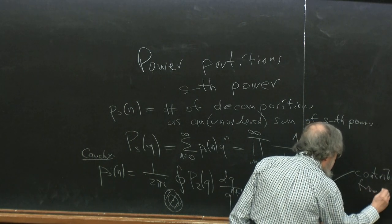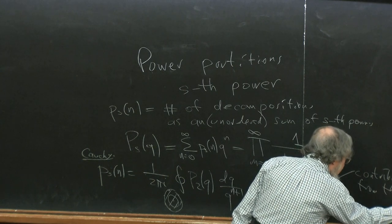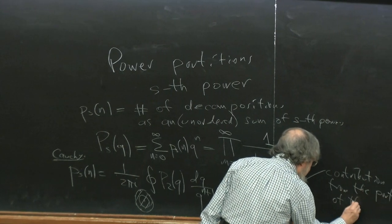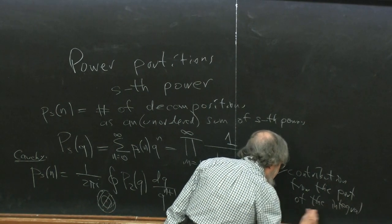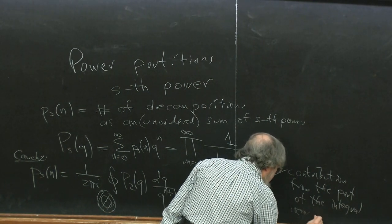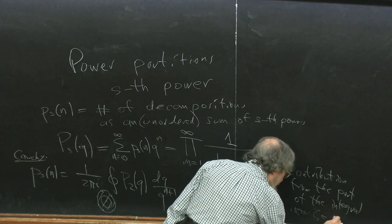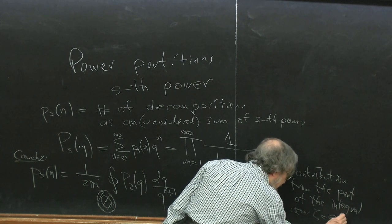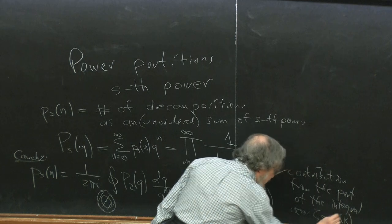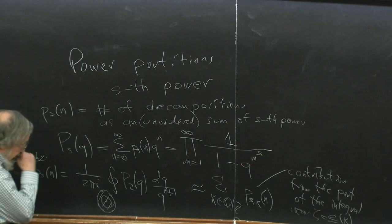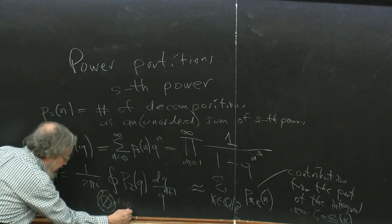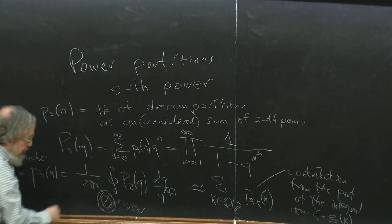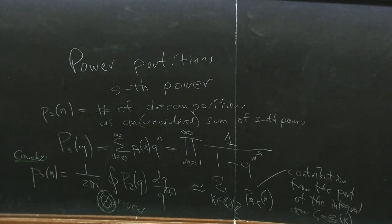We found that p_2(q) has very well-defined behavior near roots of unity — sometimes blowing up, sometimes going to zero — unlike the case s=1. It has a well-defined asymptotics and even an exact formula at every root of unity. Therefore p_s(n) is dominated by the sum over κ in Q mod Z of a contribution p_s,κ(n), the contribution from the part of the integral near each rational point κ.